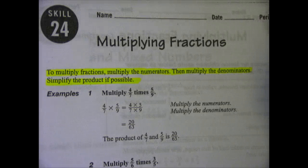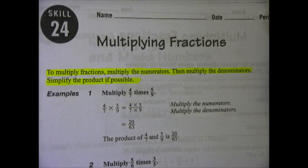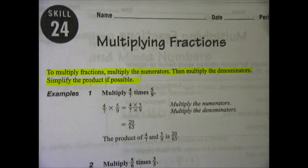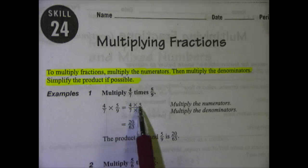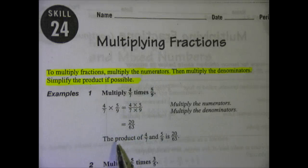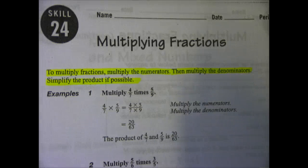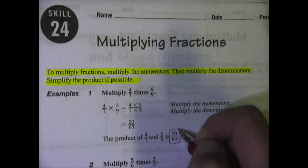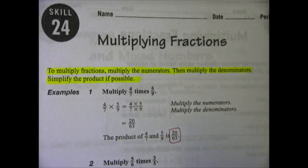The first example is multiply 4/7 times 5/9. So we multiply the numerators 4 times 5 and we get 20, and we multiply the denominators 7 times 9 and we get 63. So the product is 20/63, and that is in simplest form, so there's no need to simplify.